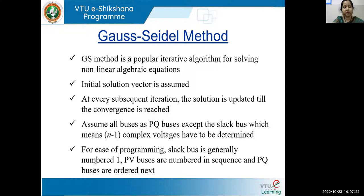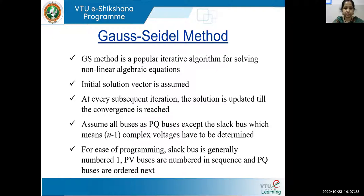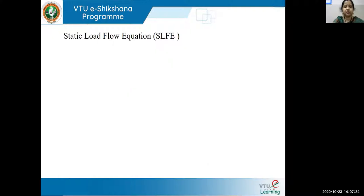For ease of programming, the slack bus is generally numbered as one. The next number usually goes to the PV bus and then we number the PQ buses — that is just for ease of programming purposes.